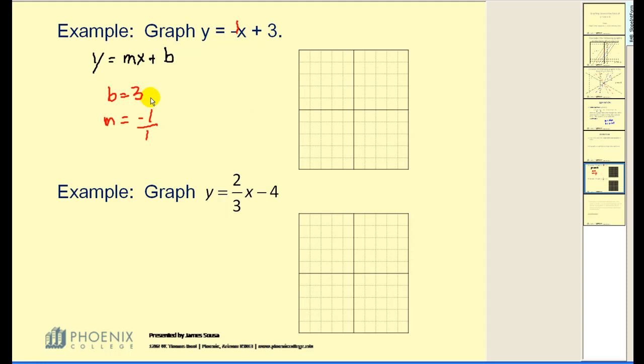In order to graph this line, we need to plot the y-intercept and then use the slope to find additional points. The slope of negative 1 over positive 1, I would go down one unit and right one unit. And this would be our line through those two points. It's as simple as that.